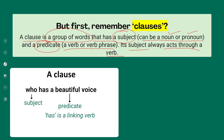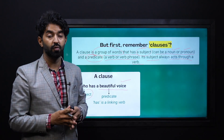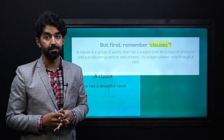For example, 'who has a beautiful voice' — this is a dependent clause, but it has a subject and a predicate which is actually about the subject. This is a clause with an example.